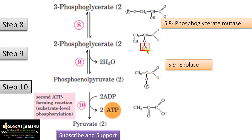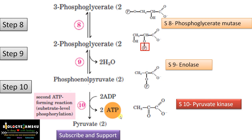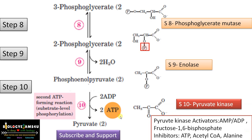In step 10, phosphoenolpyruvate is converted to pyruvate, removing the phosphate, which is utilized for the formation of ATP — ADP becomes ATP. This is the second substrate-level phosphorylation, forming 2 ATP molecules. Enol pyruvate is first formed and quickly converted to keto pyruvate, as it is more stable. The enzyme is pyruvate kinase, also a regulatory enzyme, activated by AMP, ADP, and fructose-1,6-bisphosphate, but inhibited by ATP, acetyl-CoA, and alanine. The three regulatory enzymes in glycolysis are hexokinase, phosphofructokinase, and pyruvate kinase.